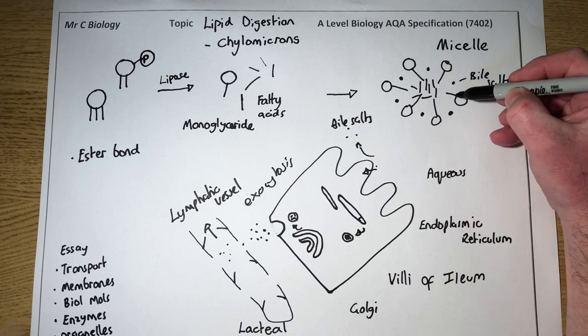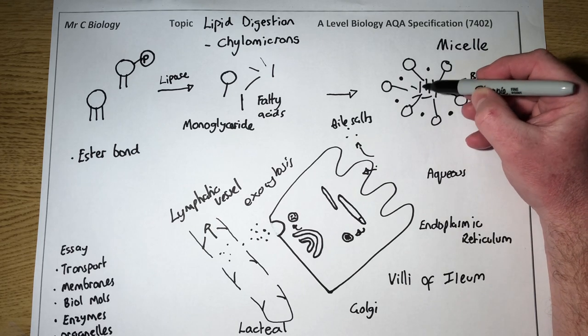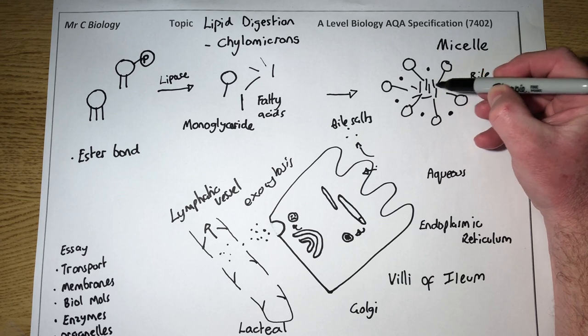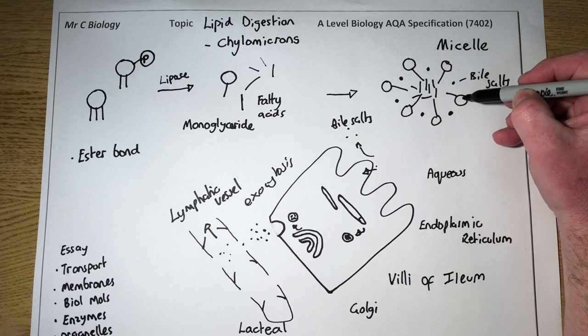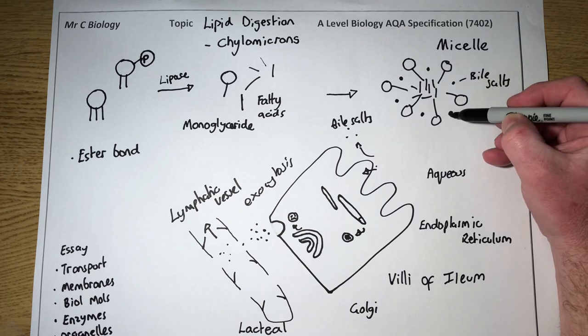Why do they form structures like this? Well, the fatty acid tails are hydrophobic and water-hating, so they associate in the middle, and around the outside we've got the hydrophilic water-loving heads, and again with the bile salts.